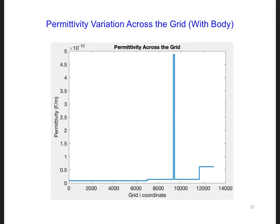And this is what I get for the permittivity plot when there is the body included. As expected, the permittivity is quite a bit higher here where the body is located compared to the other materials.